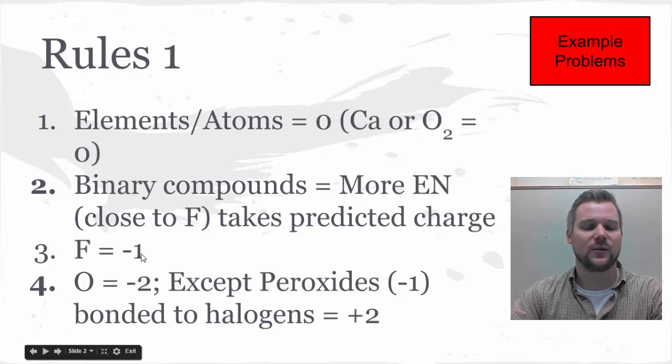Fluorine is always -1. Oxygen is -2, and we use this one a lot, except when oxygen is a peroxide, which is -1. That's hard for students to see on their own, so normally I let you know when a peroxide is present.